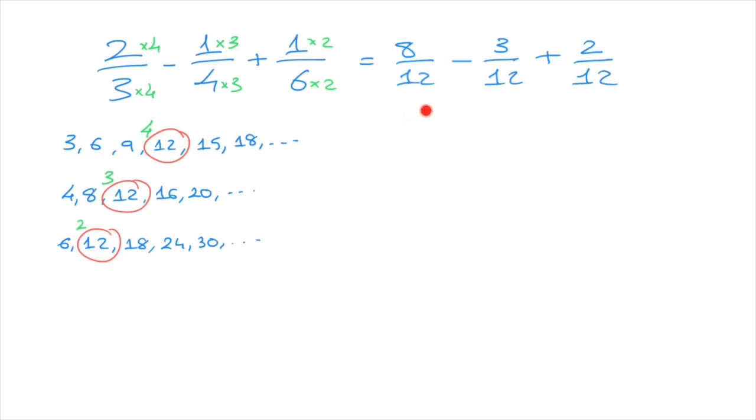And now we have three fractions which are all written over the same denominator. And so now we can calculate and say that that's equal to 8 minus 3 plus 2, all of which are written over the same denominator, 12. We now calculate 8 minus 3, that's 5, plus 2 is 7. So we write our answer as 7 over 12.